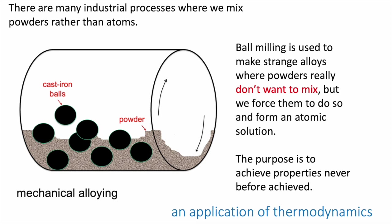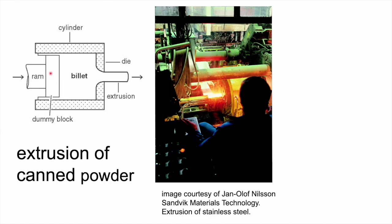Of course, we end up with an alloy powder, but what we really want is a solid chunk of material. So you take your powder and extrude it hot through a die — this compacts all the powder and produces a solid object. This is rather like the children's toy where you extrude plasticine out of a die, but it's done at high temperatures because metal powders will flow and bond together at high temperatures. This is a commercial process.